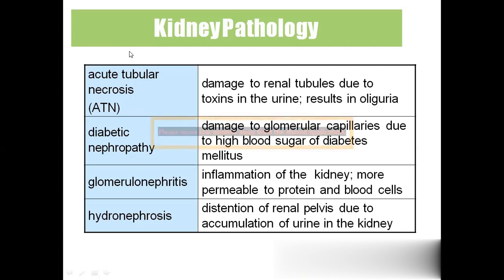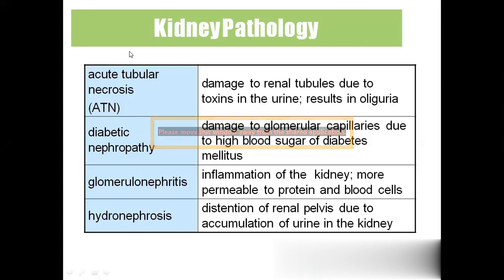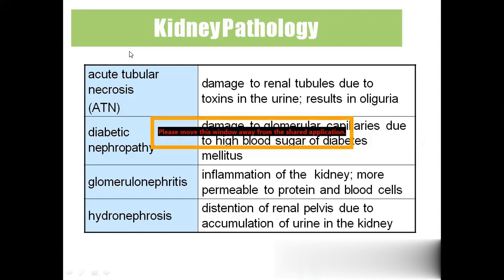Glomerulonephritis is inflammation of the kidney. The suffix 'itis' means inflammation; 'glomerulonephro' refers to the glomerulus inside the kidney plus the kidney itself. If there is any damage to the kidney, protein and blood will appear in the urine. Hydronephrosis is distension of the renal pelvis — due to heavy accumulation of urine, the kidney falls from its position. 'Hydro' means water/urine.